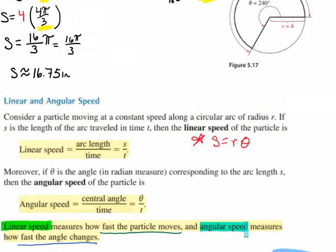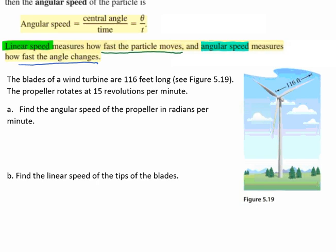Let's take a look at an example. The blades of a wind turbine are 116 feet long, as shown in the diagram. The propeller rotates at 15 revolutions per minute, meaning it goes around 15 times every minute.